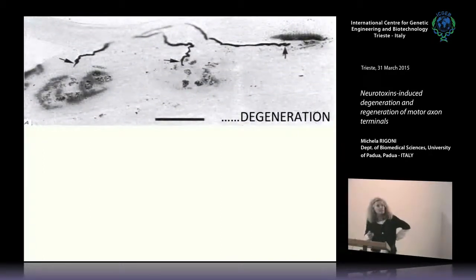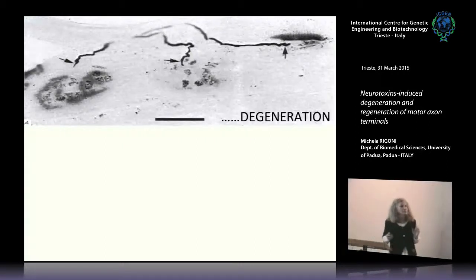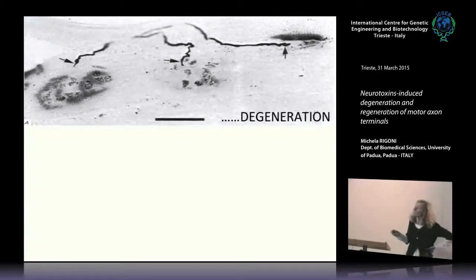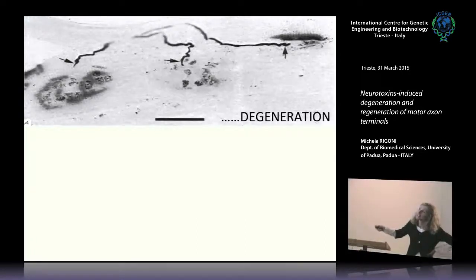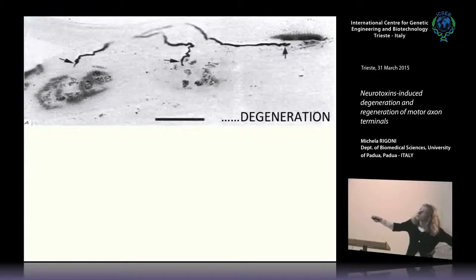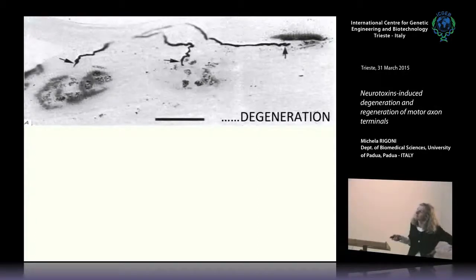Despite their very different biochemical actions, both classes of neurotoxins paralyze the neuromuscular junction and lead to its degeneration. A striking feature is that the degeneration is really restricted to the presynaptic bouton, whereas the nerve remains intact.